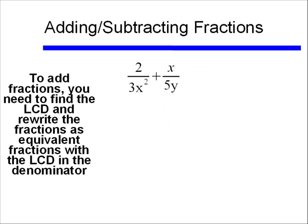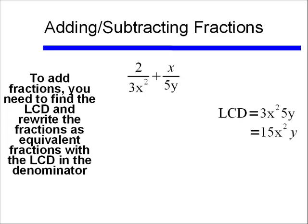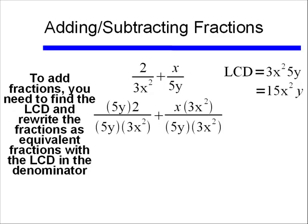Lastly, we're going to talk about adding and subtracting fractions. To add or subtract fractions, we need to first find the LCD — the least common denominator — and then rewrite the fractions as equivalent fractions with that LCD in the denominator. For example, if my denominators are 3x squared and 5y, my LCD is going to be 3x squared times 5y, or 15x squared y. I'd multiply the numerator and denominator of my first term by 5y, and my second term by 3x squared, ending up with 10y plus 3x cubed divided by 15x squared y.